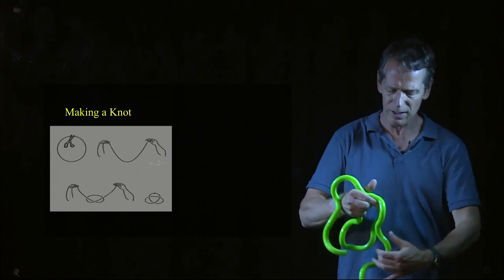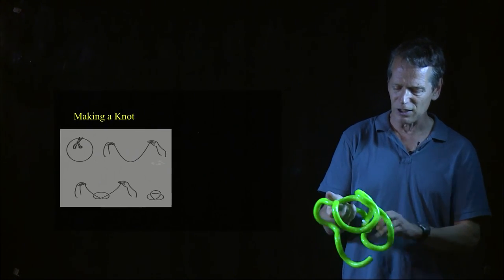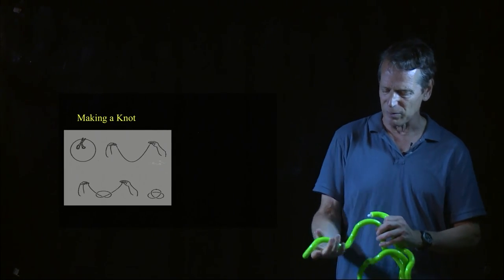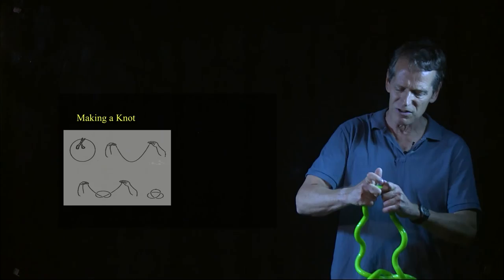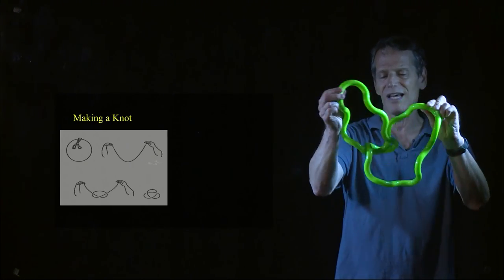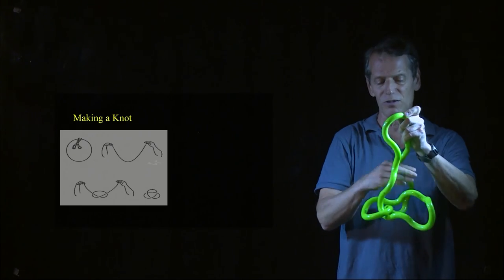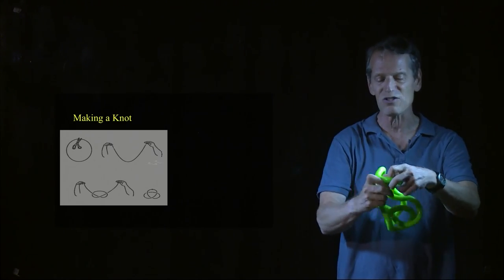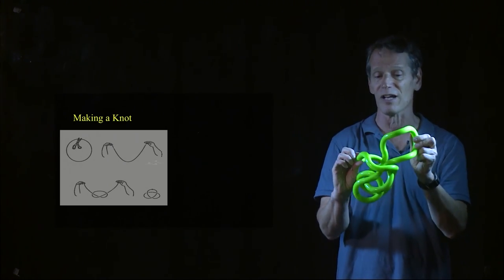But if I take this same toy and I tie a knot in it, and then I glue the two loose ends together by snapping it closed, in essence, I've trapped that knot on the string. So I can't get that knot off. And it's actually there. And I'm allowed to deform the knot as much as I want. But it at least appears that I cannot disentangle that knot.